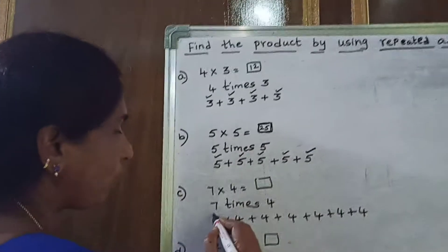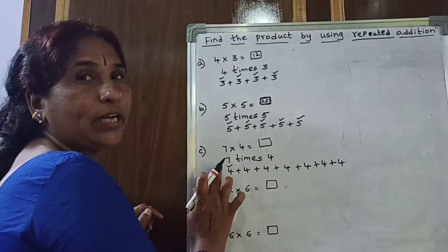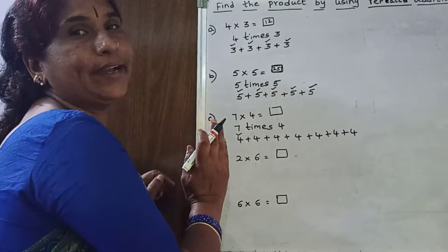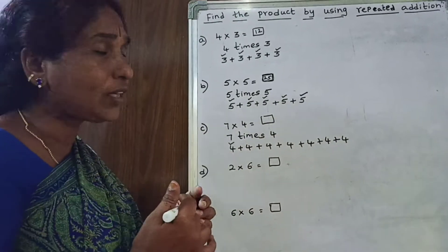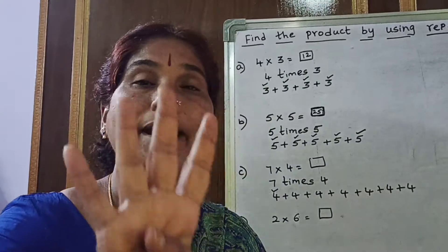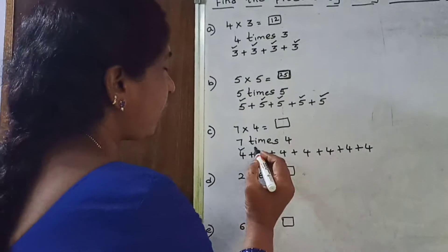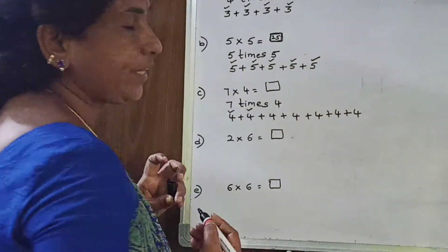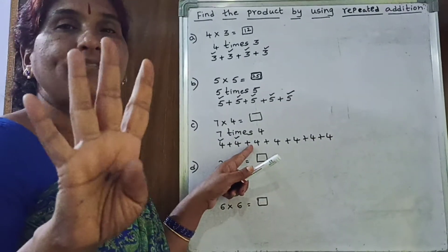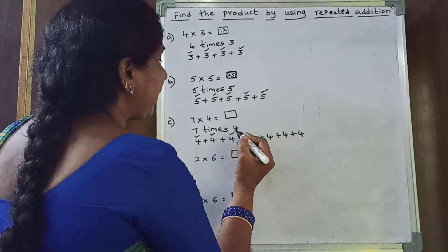See, first one is 4 — completed. Whichever number is completed, put a tick mark so you know it has been added. So first 4 we have taken. Now second number: 4 plus 4 — 4 in mind, 4 in hand, 4 after: 5, 6, 7, 8. Second 4 also finished — 8. Again, 8 in mind, 4 in hand, 8 after: 9, 10, 11, 12. This one also completed — 12.